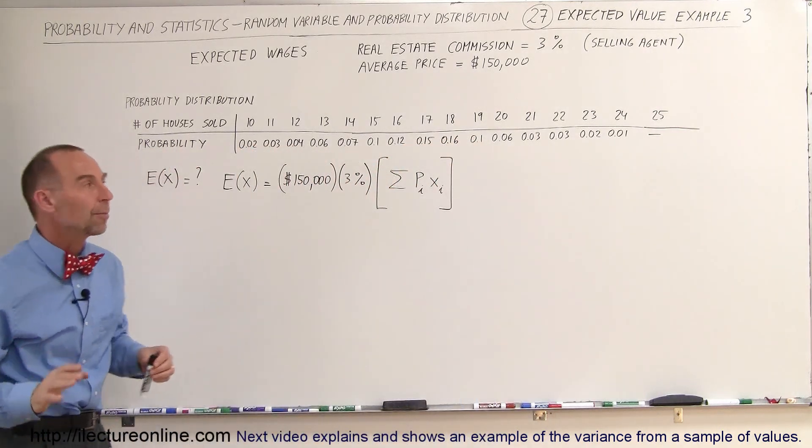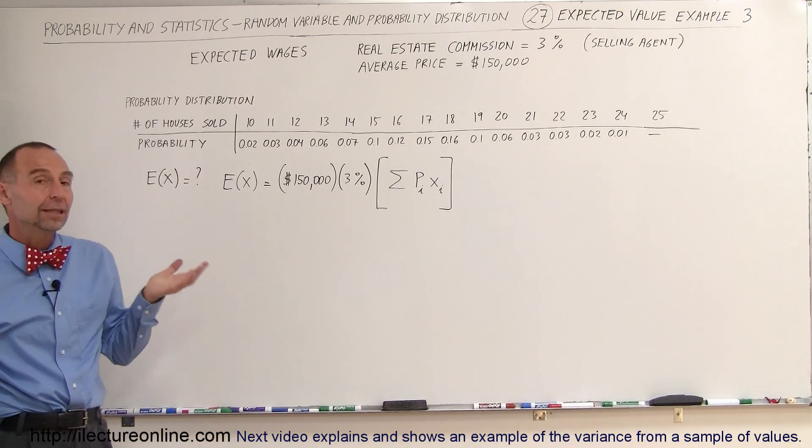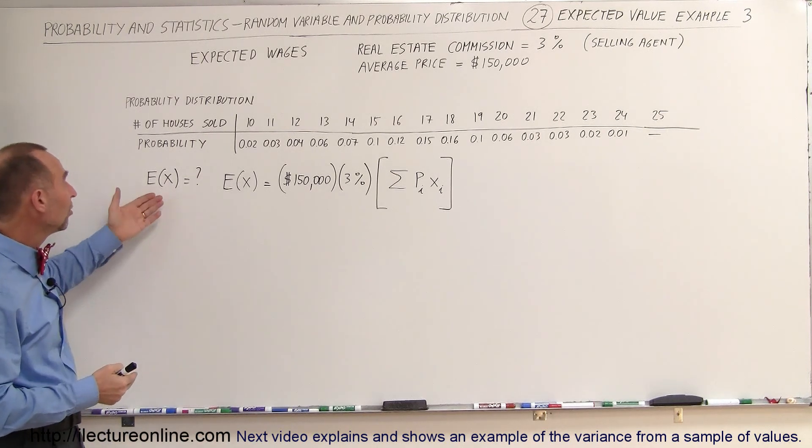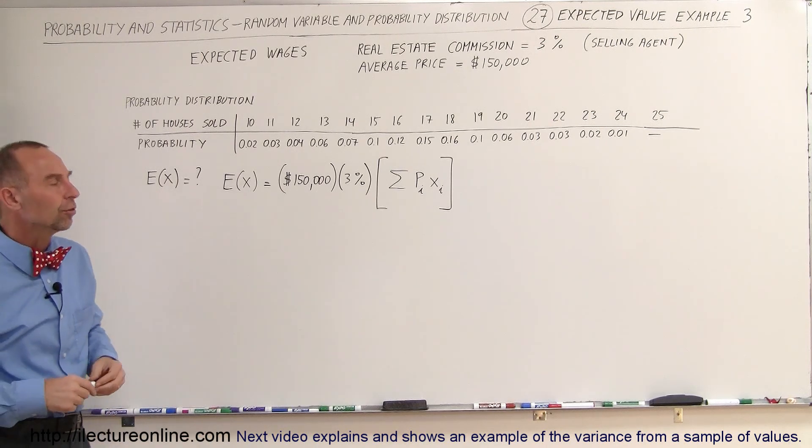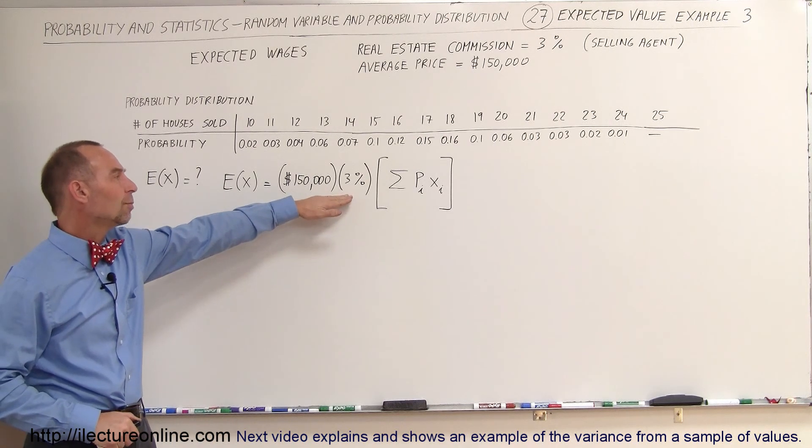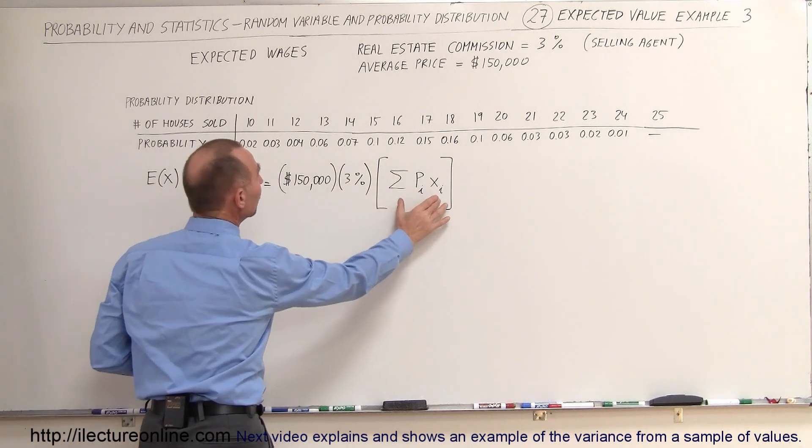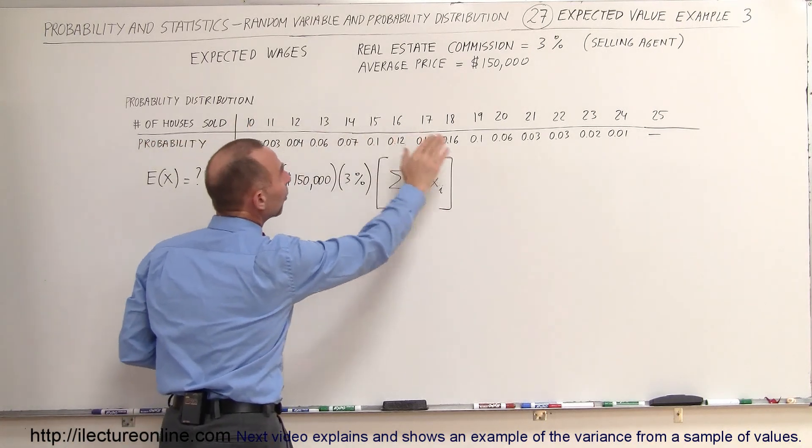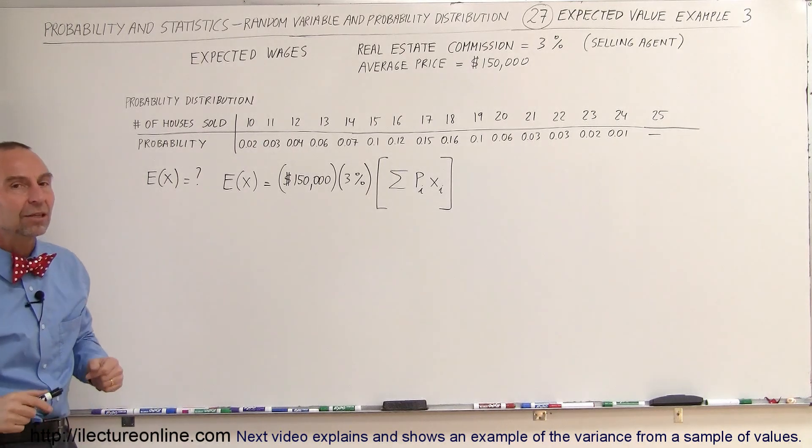And so the equation then becomes, what is the expected value of the earnings of the selling agent? So we already know that the average price is $150,000, the commission is 3%, and then we have to multiply that times the number, the expected value out of the number of homes that you can expect to sell based upon that probability distribution.